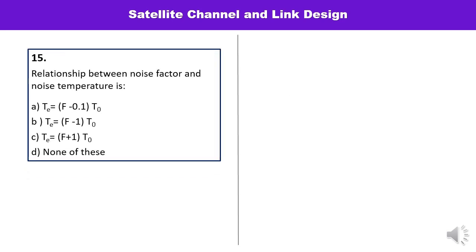Next question: what is the relationship between noise factor F and noise temperature T? The relationship is T = (F − 1)·T0, where T0 is the reference temperature. So B is the correct option.